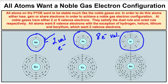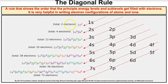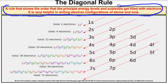Now let's look at how we write electron configurations. The diagonal filling rule shows the filling order of the different orbitals surrounding the nucleus. It works for about 90% of atoms on the periodic table. This rule shows the order that principal energy levels and sub-levels get filled with electrons, and it's very helpful when writing configurations of atoms and ions. Electrons start filling lower energy levels first and work their way up.